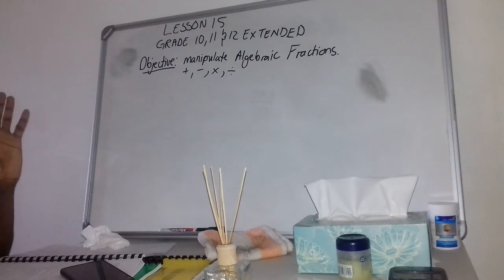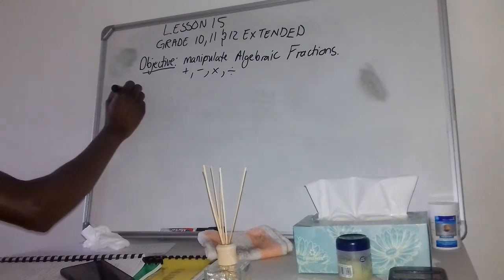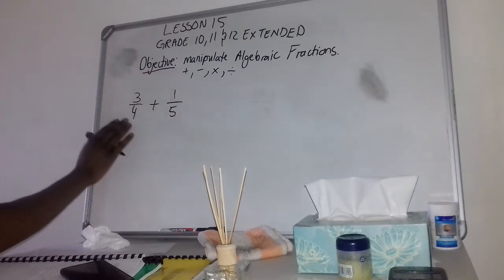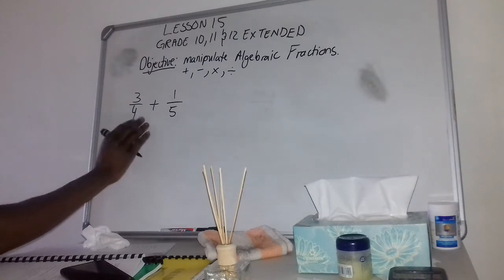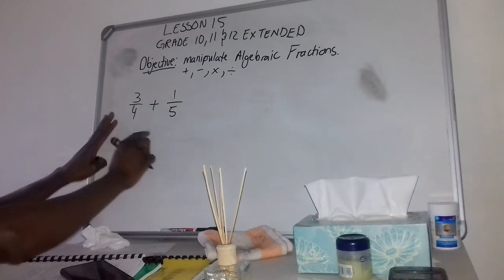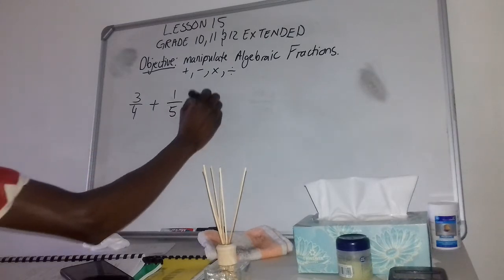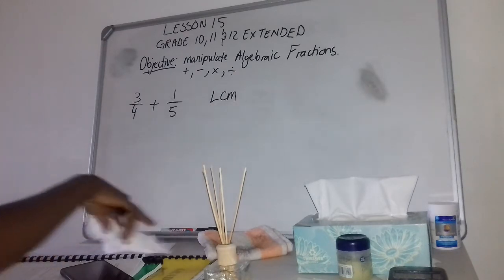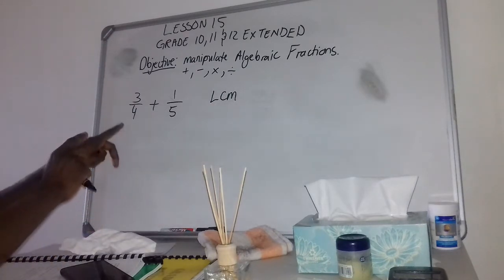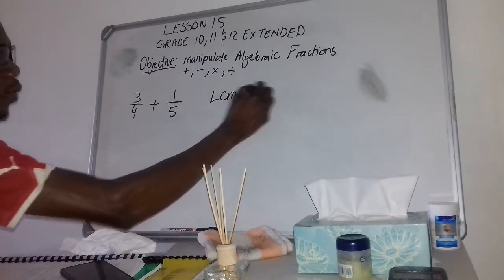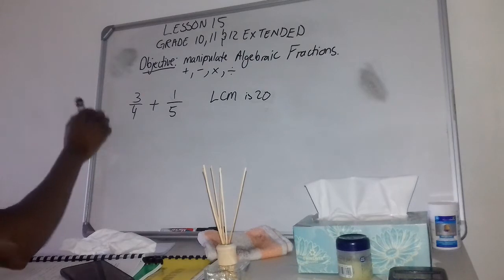Before we do this, I just want to take you back to the basics. Let's do this together: 3/4 plus 1/5 — let's write this as a single fraction. If you can remember how to do this, you are not going to struggle. To add these two fractions we need to use the lowest common multiple of the denominators, so we need to find the LCM of 4 and 5, which is 20.